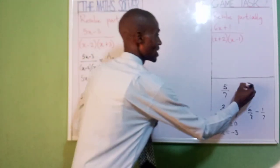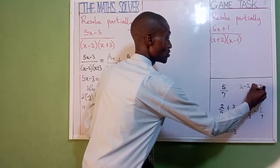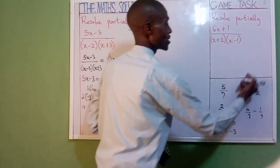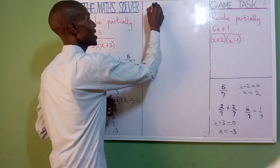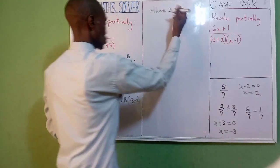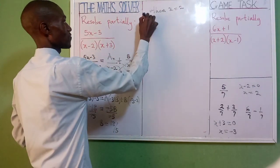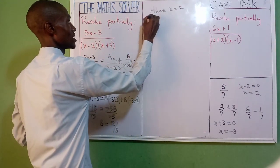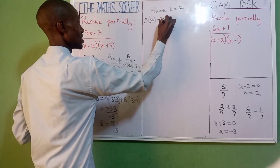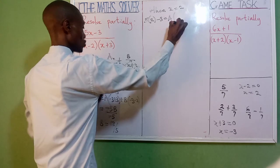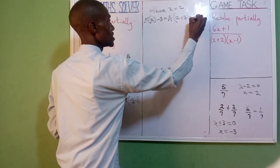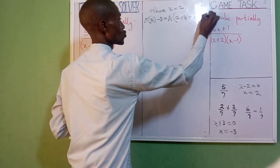Now for b — we have x minus 2, it also equates to 0. So x equal to 2. When x equals 2, put your 2 here: 5 into bracket 2 minus 3.